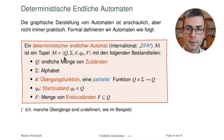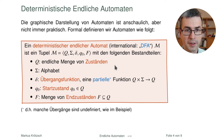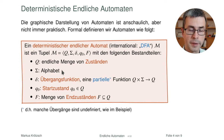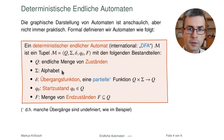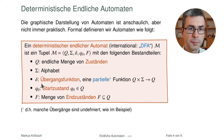Der erste Bestandteil ist die Menge der Zustände Q — eine endliche Menge, traditionell mit großem Q bezeichnet, weil Zustände oft mit kleinem q, q1, q2, q3 bezeichnet werden. Sigma, das Alphabet, kennen Sie schon: Automaten sind jeweils für ein bestimmtes Alphabet definiert, das zusätzlich gegeben wird. Das Wichtigste beim Automaten ist dann die Übergangsfunktion — das ist das, was wir im Bild mit Pfeilen dargestellt haben.